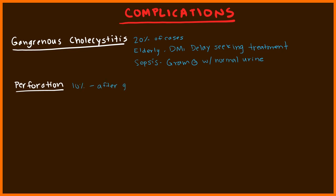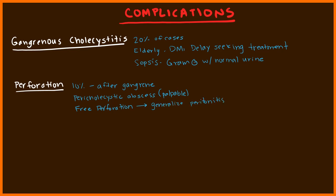Perforation happens in about 10% of cases and is typically a complication after gangrenous cholecystitis — the wall breaks down at a focal point and perforates. You can get a pericholecystic abscess, which is palpable on abdominal examination. A full free perforation is when contents spill into the peritoneum, causing generalized peritonitis. Free perforation is associated with very high mortality and must be recognized and treated immediately.